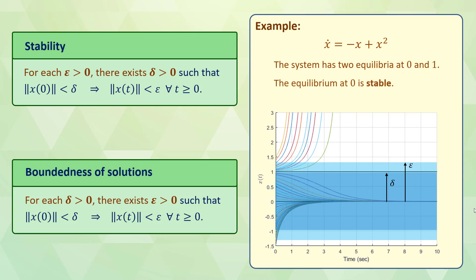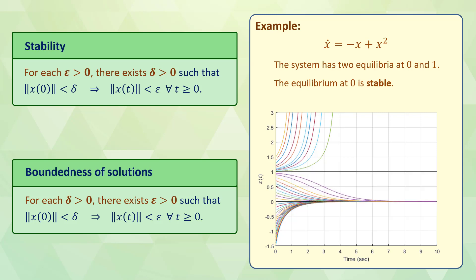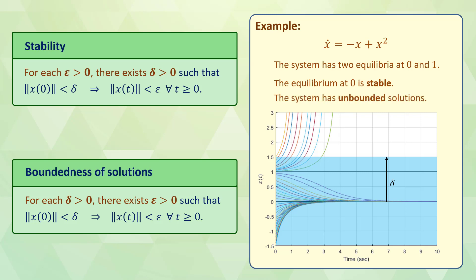For any positive epsilon, there exists a positive delta such that if the initial condition is in the delta neighborhood of the origin, the solutions remain in the epsilon neighborhood of the origin. However, it can be observed from the plot that there are unbounded solutions — for example, solutions starting from an initial condition larger than 1 grow unbounded. Using the boundedness definition, we can choose delta equals 1.5 and see that there exists no positive epsilon such that solutions remain in the epsilon neighborhood. So the origin is stable, but the system has unbounded solutions.